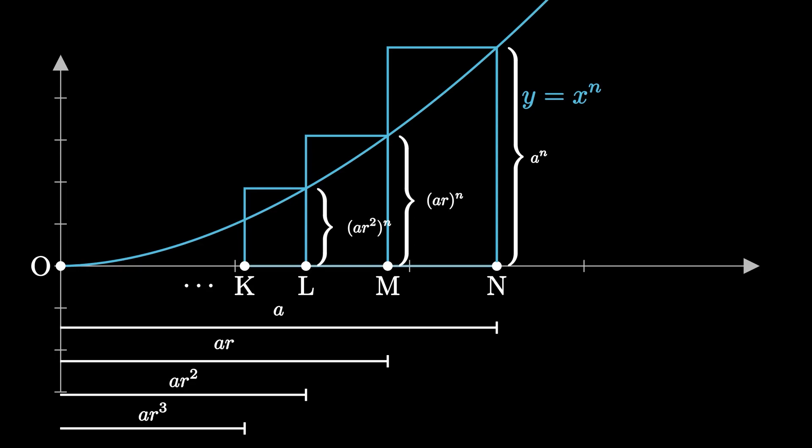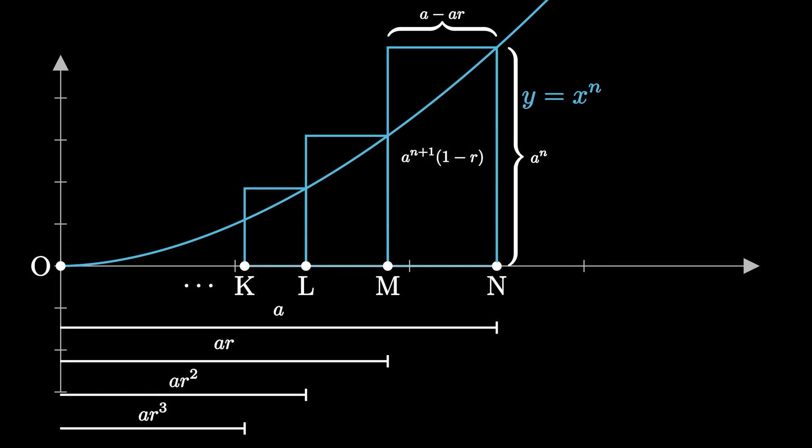the rectangle between m and n has base length a minus ar and height a to the n. Let's simplify that area to a to the n times a times 1 minus r or a to the n plus 1 times 1 minus r. From there, we can use the summation formula for an infinite geometric series to add up our infinite number of rectangles. An infinite geometric sequence with initial value a and common ratio r is simply a over 1 minus r.